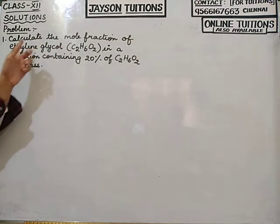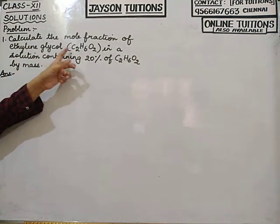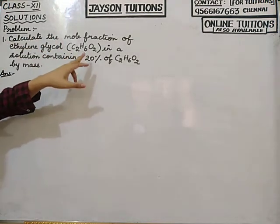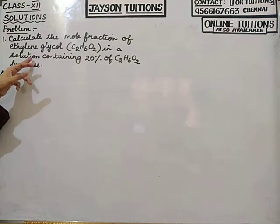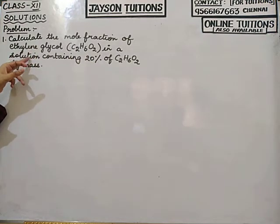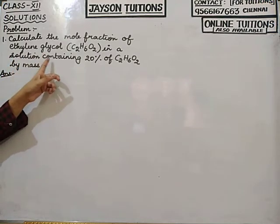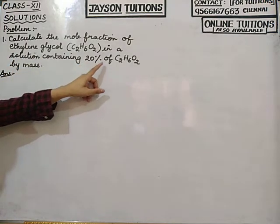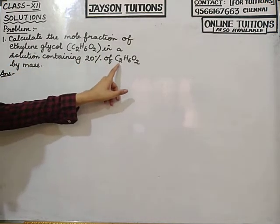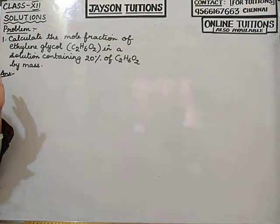Calculate the mole fraction of ethylene glycol. The formula for ethylene glycol is C₂H₆O₂. This is a solution, meaning ethylene glycol is mixed with water, containing 20% of C₂H₆O₂ by mass.